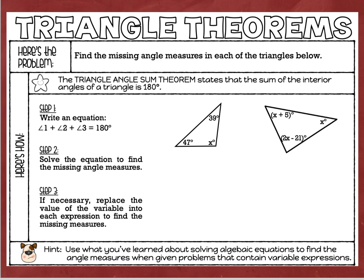Let's get started. We're going to find the missing angle measures in each of the triangles below. Where the little star is on the side, I have what I consider an important reminder: the definition of the triangle sum theorem. The triangle sum theorem states that the sum of the interior angles of a triangle is 180 degrees. It doesn't matter what triangle you ever meet in your life.